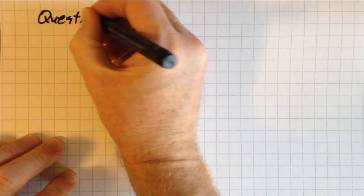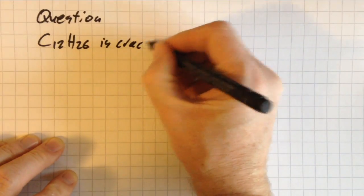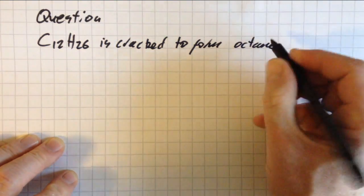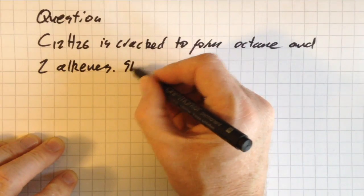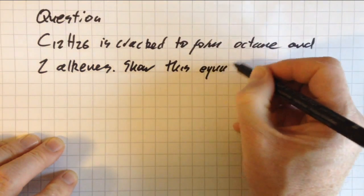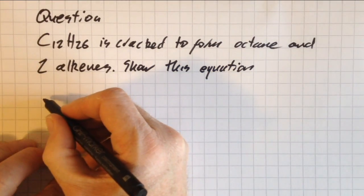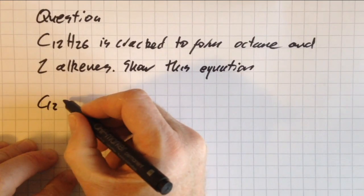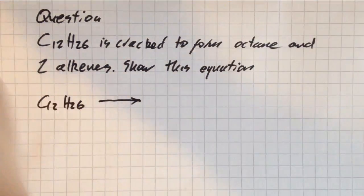All right, so a typical question: C12H26 is cracked to form octane and two alkenes. Show an equation. All righty, there'll almost certainly be a point for the conditions, so definitely put heat and why not put zeolite as well.